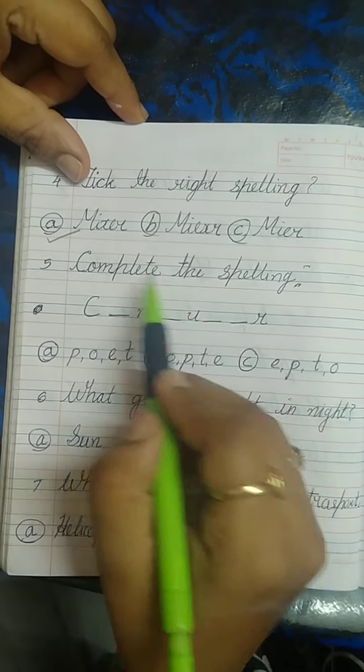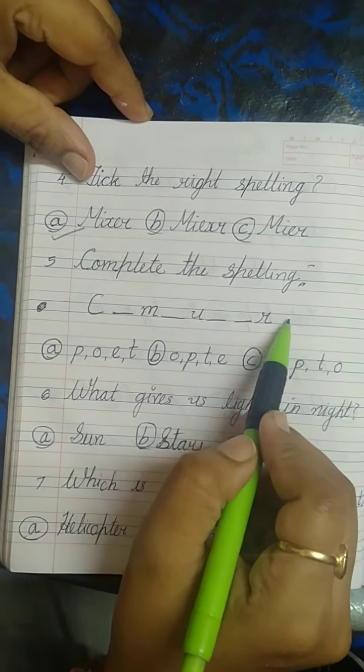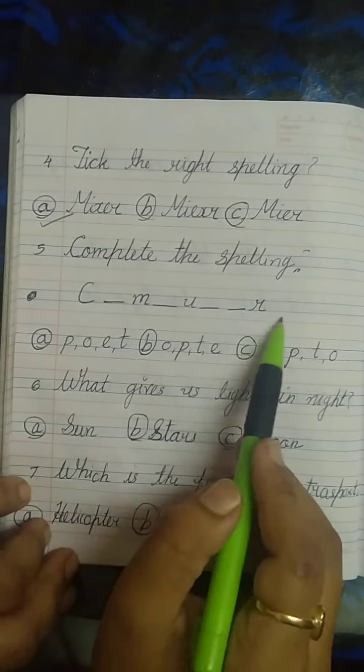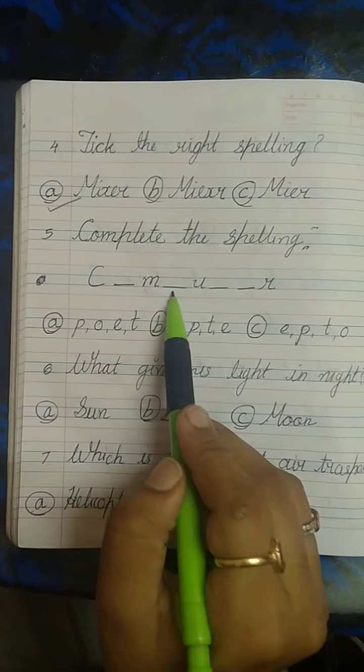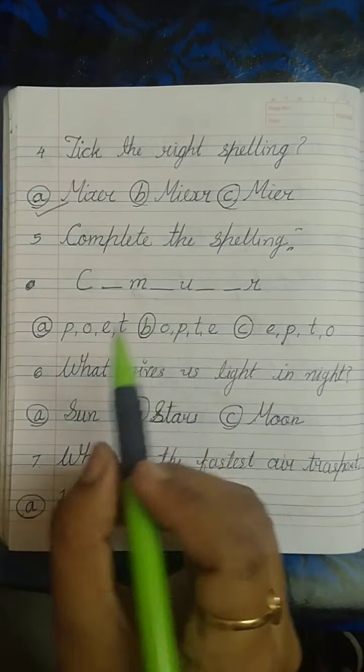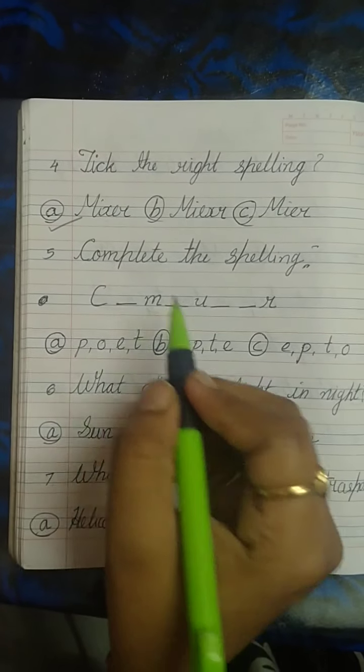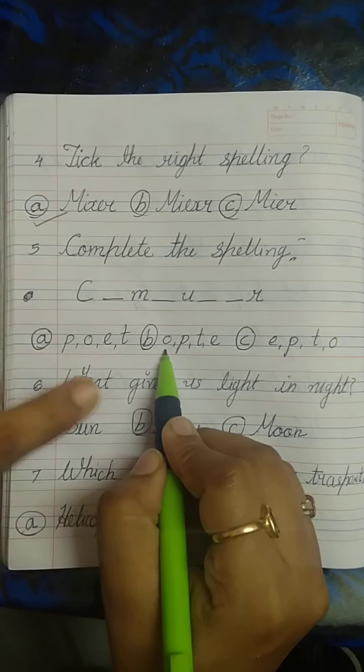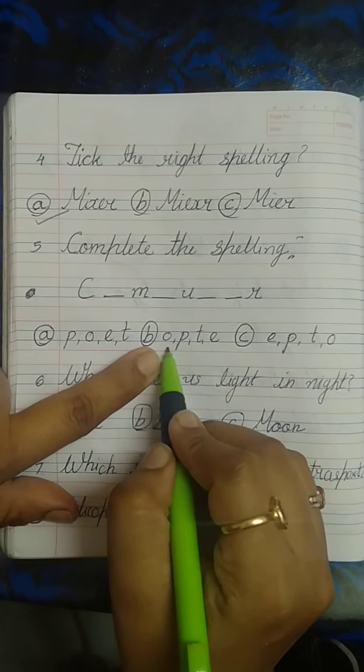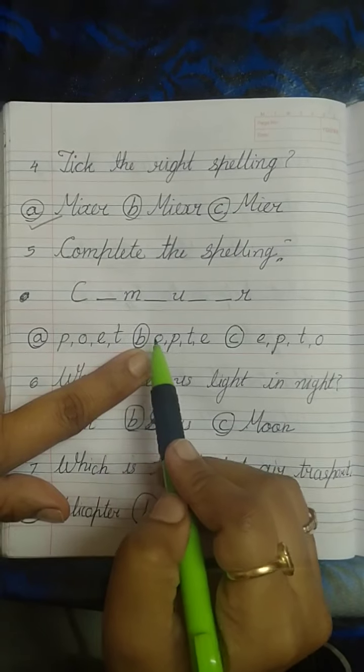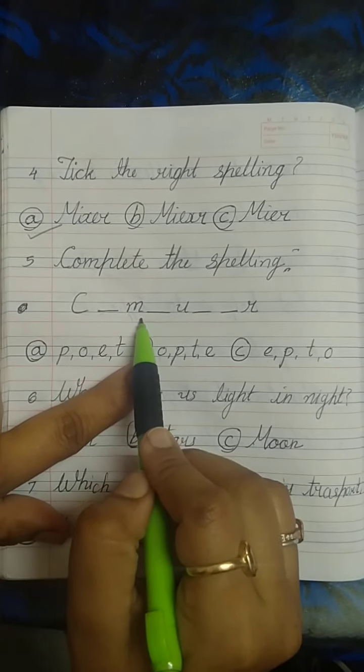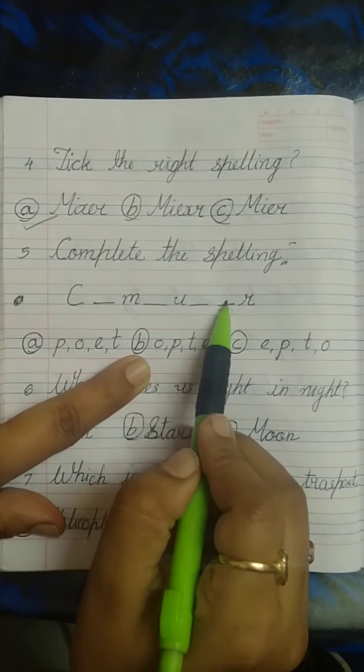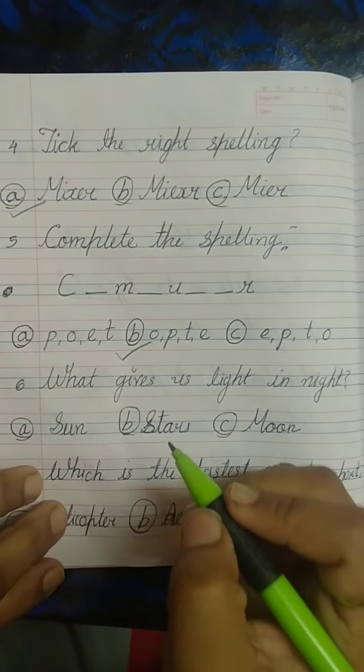Complete the spelling. You have to complete this spelling. First we have to identify this spelling. This is the spelling of computer. C-O-M-P-U-T-E-R. First option is O. No. Here, yes. We have to keep one by one letter. C-O-M-P-U-T-E-R, that is computer. So option B is the right answer.